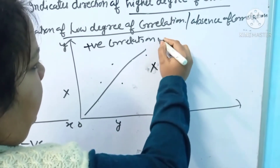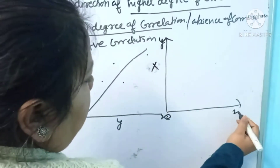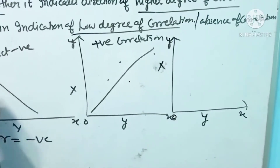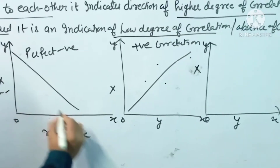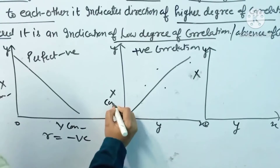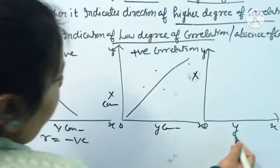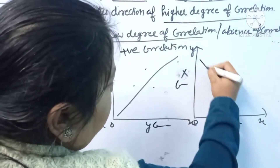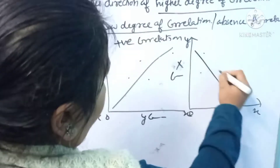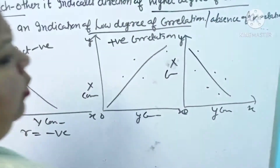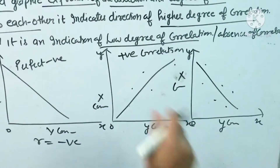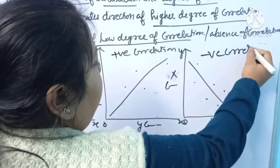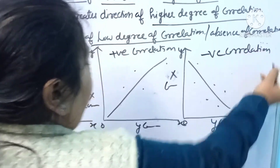Here we represent x on the horizontal axis and y as the commodity on the vertical axis. If the direction is going downward, then it is negative. If one or two points fall outside the line, then we call it negative correlation.